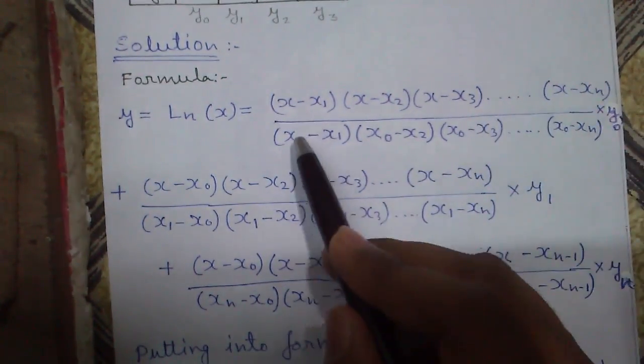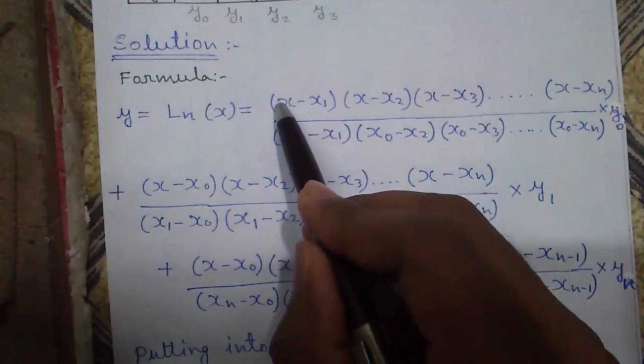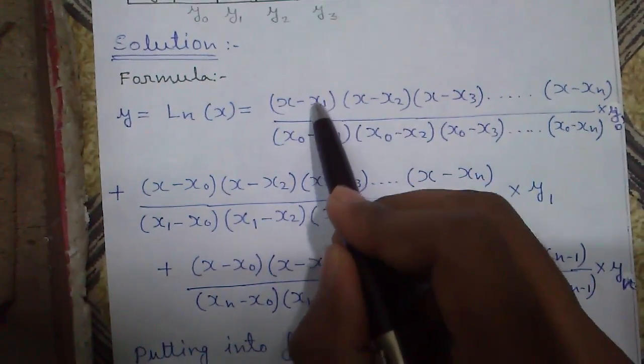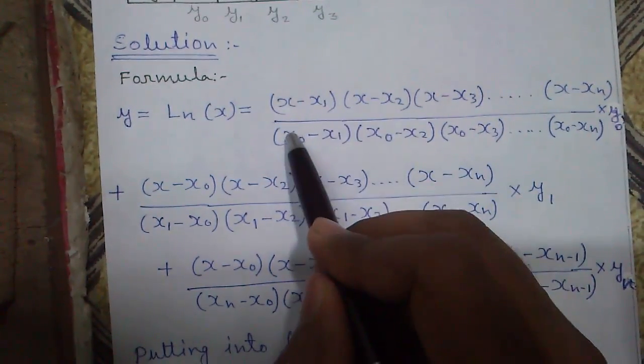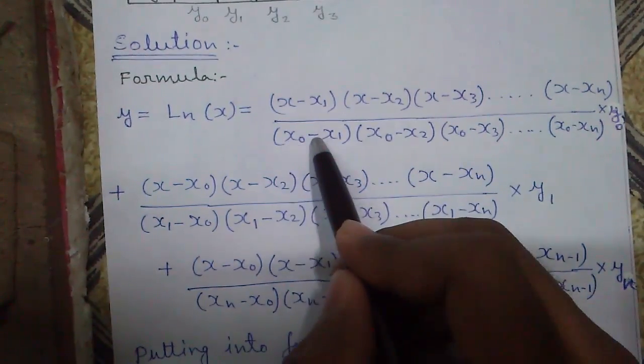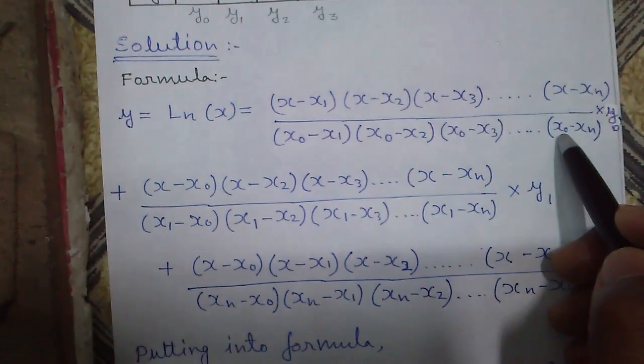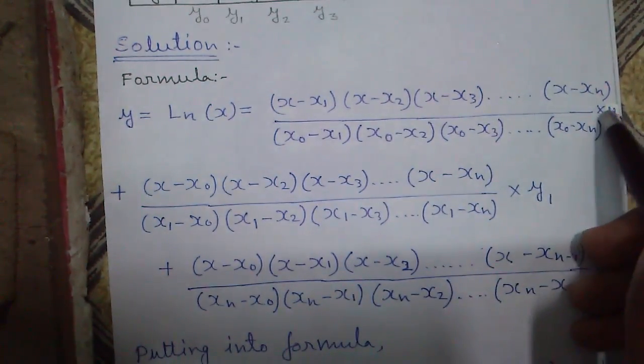In the denominator, see in the numerator x0 is missing, it starts from x minus x1, x2, not starting from x0. So x0 will be placed in the denominator: x0 minus x1, x0 minus x2, x0 minus x3. The last term will be x0 minus xn times y0.